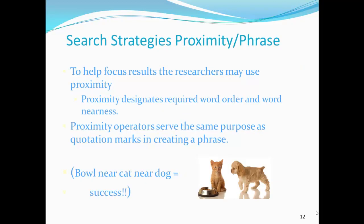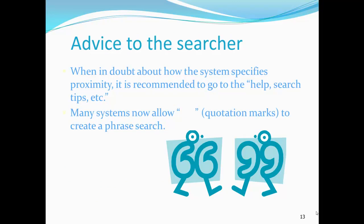Proximity is used to help you, the researcher, in focusing your searching, specifically to have records returned that are more likely to be precisely on topic and allow you to use your time more effectively. When in doubt about how the system specifies proximity, it is recommended to go to the Help, Search Tips, etc. screen. Many systems now allow quotation marks to create a phrase search.